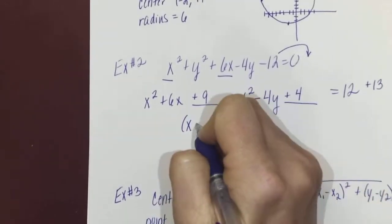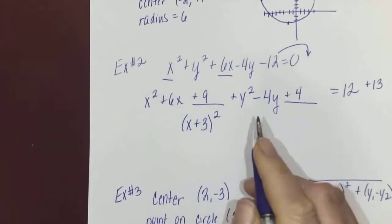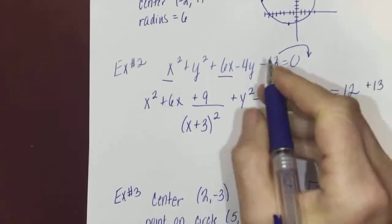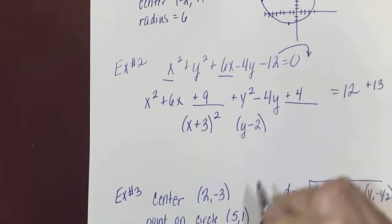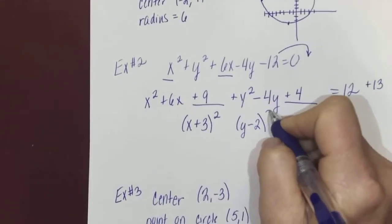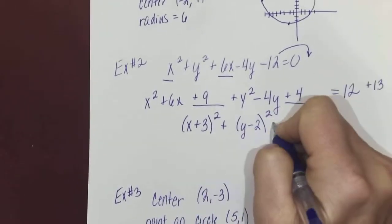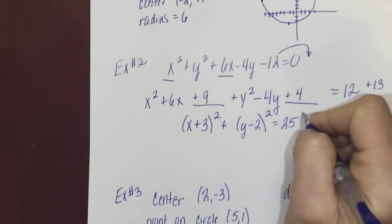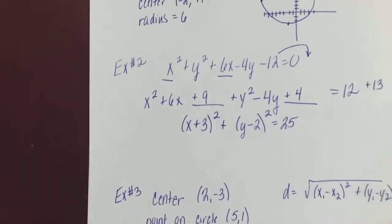This right here would factor into (y - 2)(y - 2), which is (y - 2)². 12 plus 13 is 25. Now I have what's called center-radius form, which is what I like to call it.